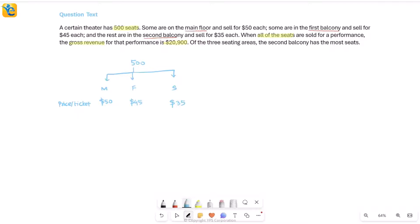This is something we will have to translate mathematically. Let me denote the number of seats on the main floor by m, the number of seats in the first balcony by f, and those in the second balcony by s. The total revenue is 50m + 45f + 35s = 20,900, and the total number of seats m + f + s = 500. This helped me create two equations, a system of equations, but I have three unknowns in it.